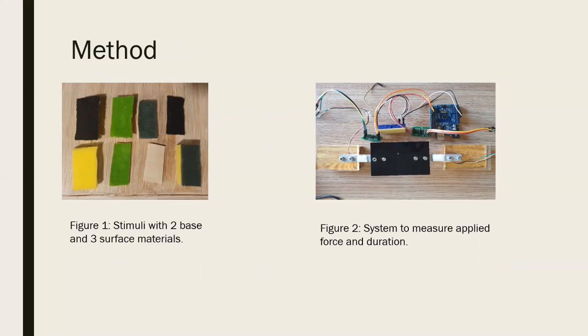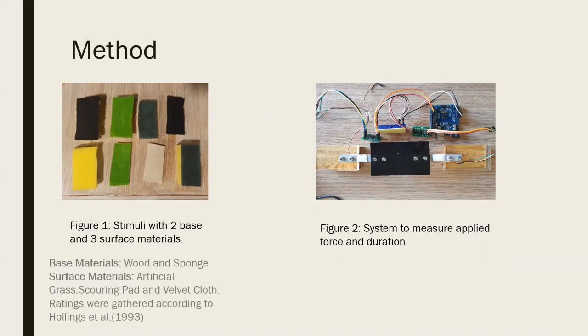As for our method, 30 participants were present in the experiment. Eight different objects were given to the participants. All objects were variations of two objects that are a wood brick and a sponge, used as a base material. Their surface materials varied between velvet, artificial grass, scouring pad, and no surface material. Objects were chosen according to the rating done by Olinx et al. at 1993.